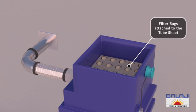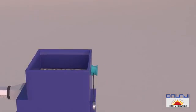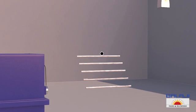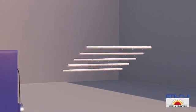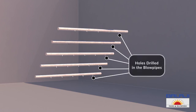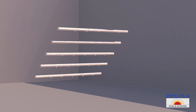Above the tube sheet in the upper body is the cleaning system of the machine. This includes a series of blow pipes. Each blow pipe is drilled with holes.